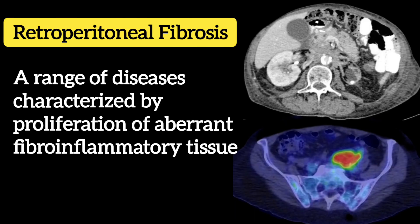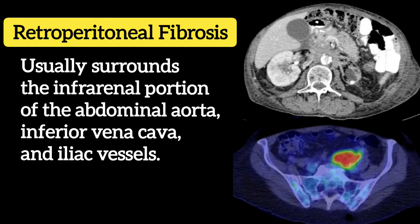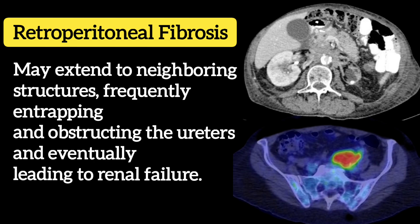Retroperitoneal fibrosis encompasses a range of diseases characterized by proliferation of aberrant fibroinflammatory tissue, which usually surrounds the infrarenal portion of the abdominal aorta, inferior vena cava, and iliac vessels. This process may extend to neighboring structures, frequently entrapping and obstructing the ureters and eventually leading to renal failure.